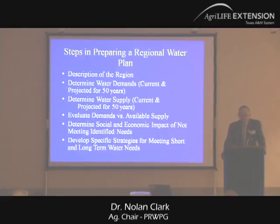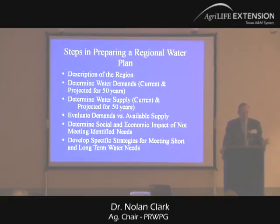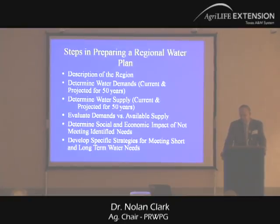Then we have to determine how much water we have, and project that for 50 years as well. When you get those two numbers, you take the difference to see how they balance out. As you can tell, when we get out into future years, we have some shortages in certain areas — we call those needs. We have to look at those and determine the social and economic impact. Then, if there is a shortage or a need, we have to develop a strategy for how we're going to meet that need, both in the short term and the long term.